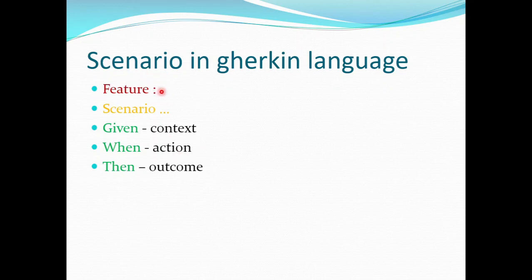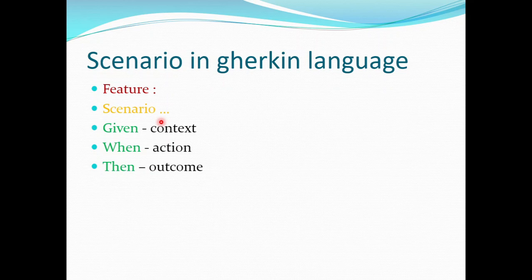First, it will have the Feature keyword where we will be giving the description of the feature which we are going to test, and that is followed by the Scenario keyword. In the Scenario keyword, we will be giving the description of the test name. And later we have the Given keyword, in which we will be describing the context of what we are doing. So let's say we have a login scenario and we want to enter the username and password of the application and click on Submit.